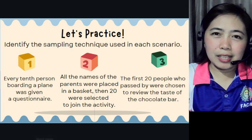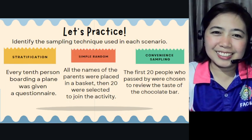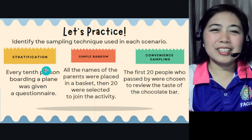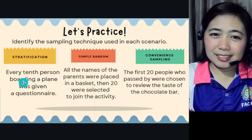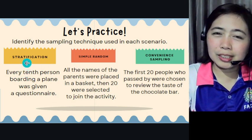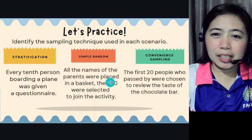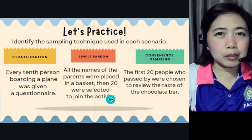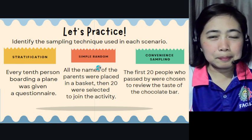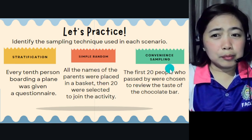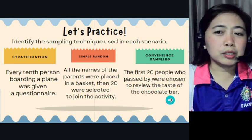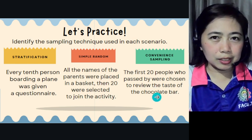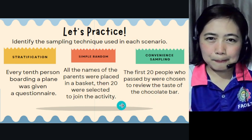Do you have your answers? Here are the answers. Every 10th person — that's systematic sampling. The names placed in a basket and 20 selected — that's simple random sampling. The first 20 people who passed by chosen to review the chocolate bar — that's convenience sampling.